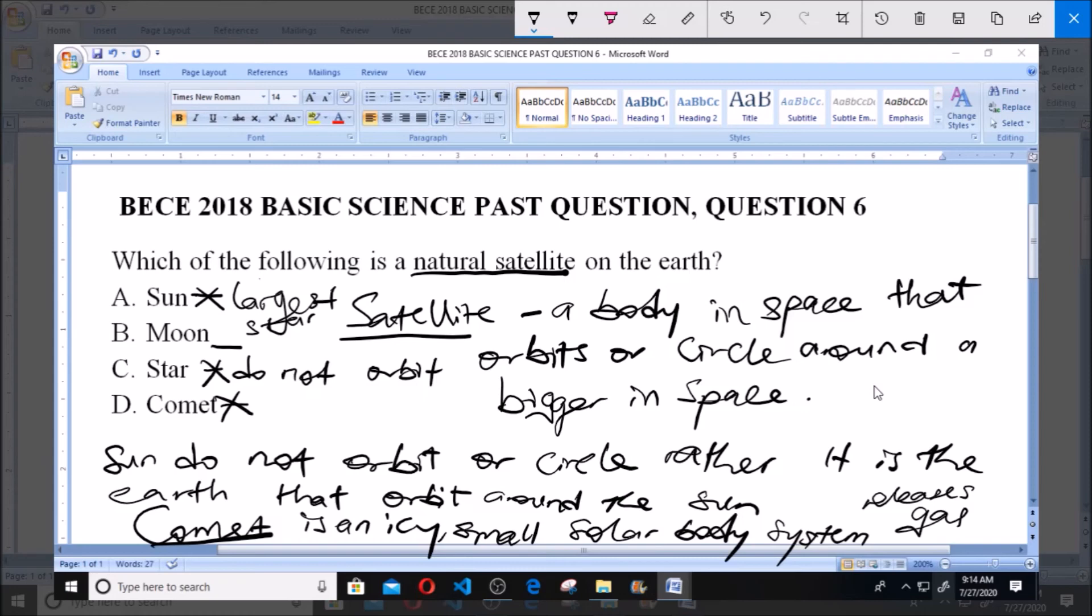So because of this, we regard moon as the satellite of the earth. Moon is regarded as the satellite of the earth because it orbits around the earth.